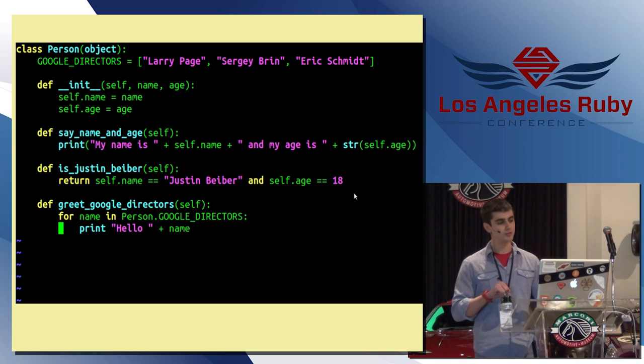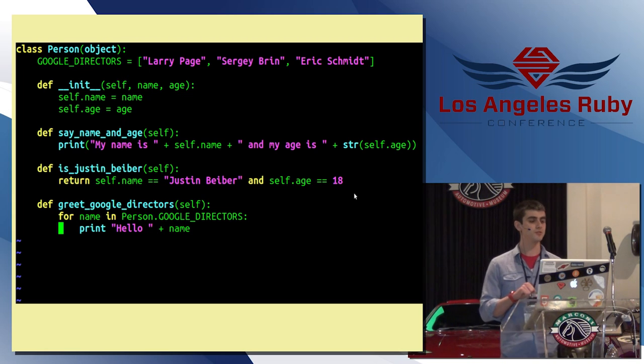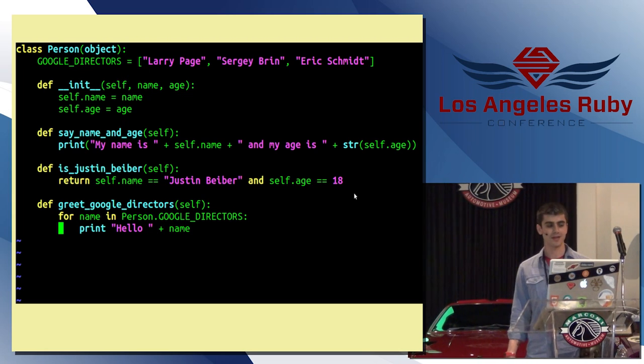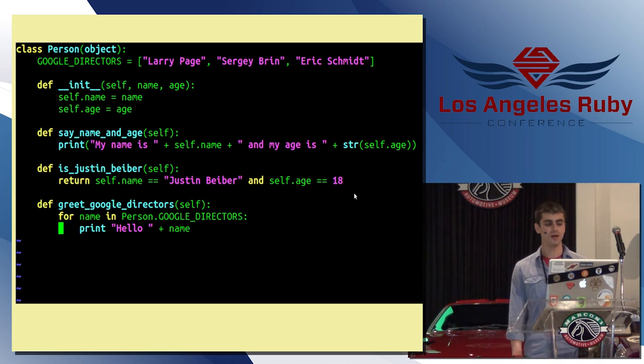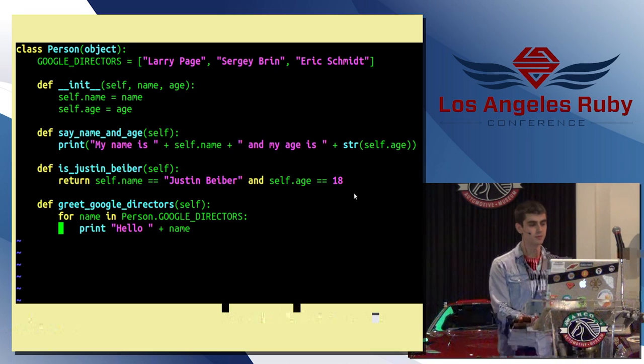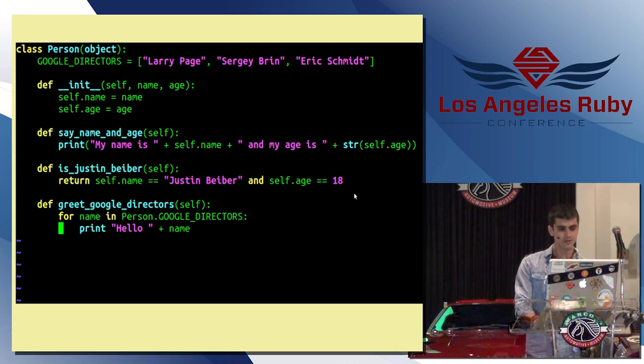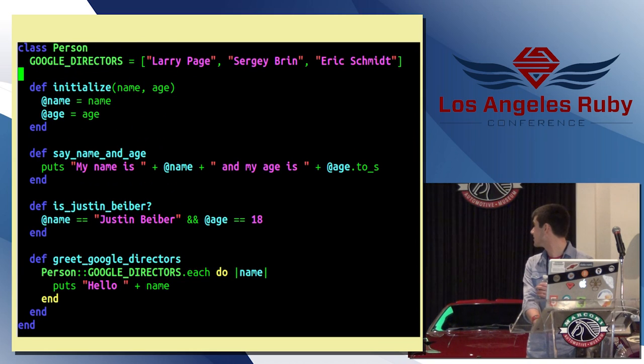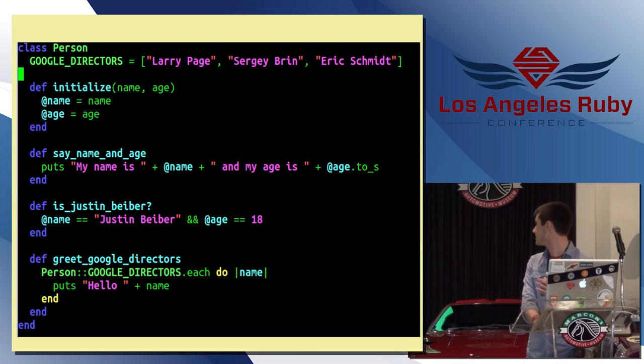You might also notice a few little differences here. You see this self parameter is littered all over the place. You'll see the is Justin Bieber method explicitly returns. And there are a few other minor differences. But if we just kind of go back and forth and just visually look at these, they're very similar. I mean, I guess you'll see that the methods don't have an end. They just have a def. We'll talk more about that in a minute. But overall, the design is very, very similar.